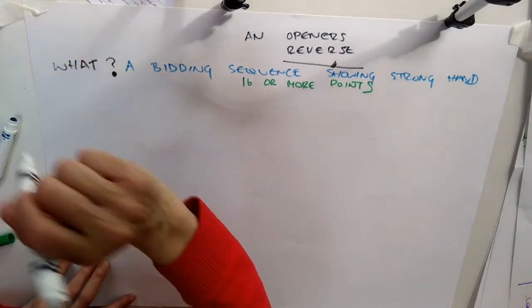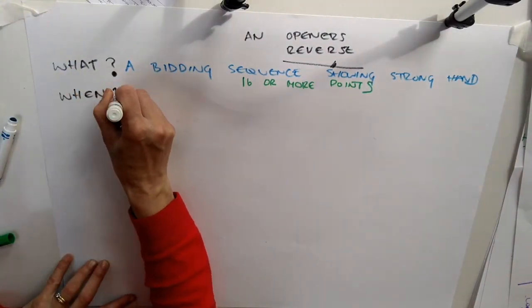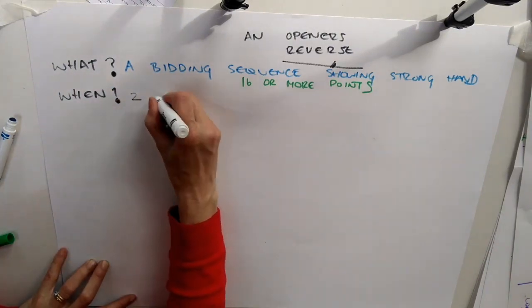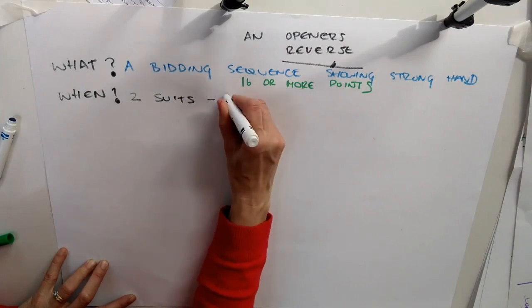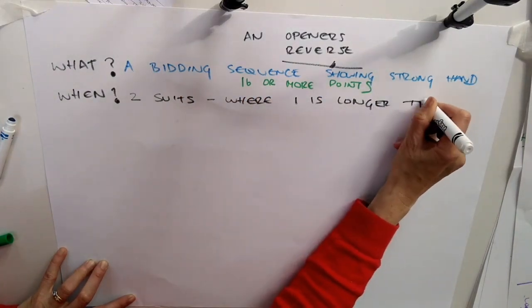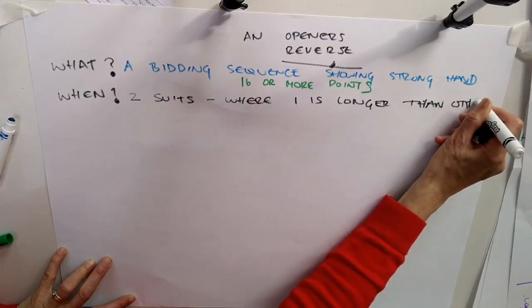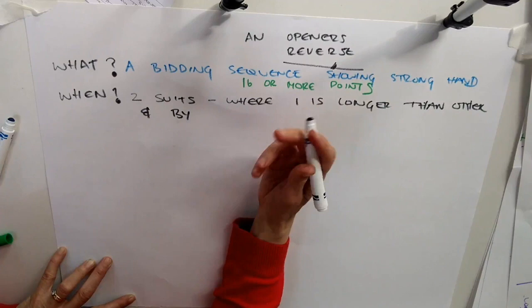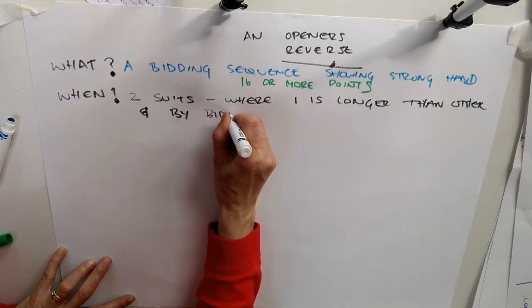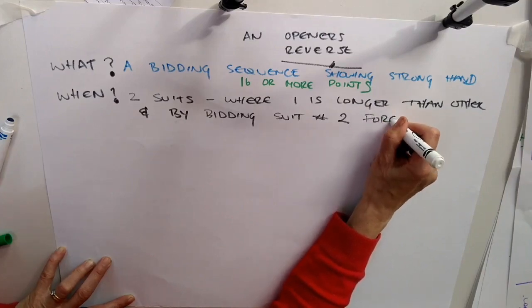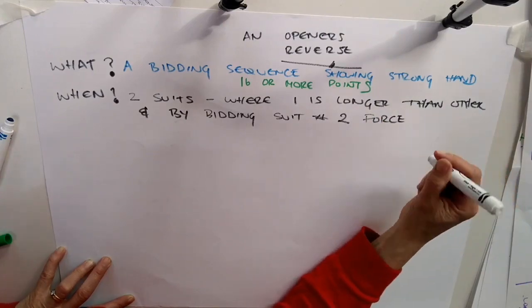When does this bid execute? It happens when an Opener has at least two suits where one is longer than the other. And by the Opener bidding the second suit, it would force the Responder to the three level if they had to come back to the first suit.